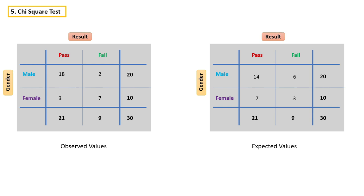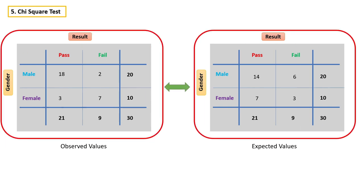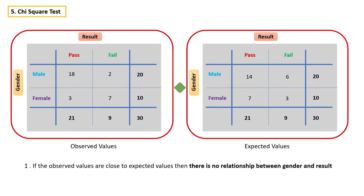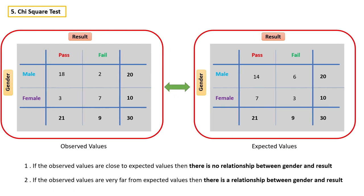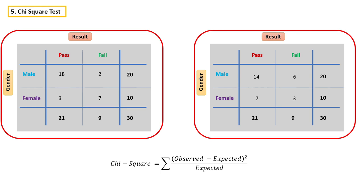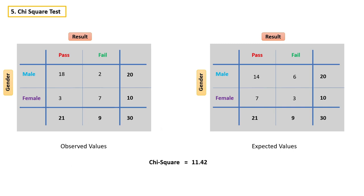Now, simply we can compare these two tables. If the observed values are close to the expected values, then there is no relationship between gender and result. Or if the observed values are very far from the expected values, then there is a relationship. But how much difference must there be to make this decision, and how do we quantify the difference? That is where chi-square comes in. The formula is: the sum of (observed minus expected) squared divided by expected. Let's calculate chi-square by substituting the values — in this case, the chi-square value will be 11.42.